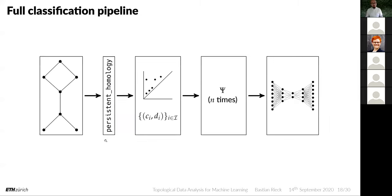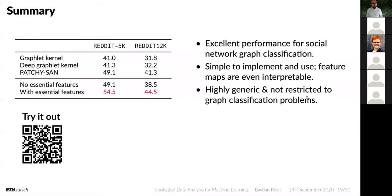The classification pipeline: take a graph, filtrate it, apply persistent homology to obtain a diagram, compute the psi function with different parameters, and feed the resulting features into a deep learning architecture for graph classification. They show excellent performance for social network graph classification. Importantly, including essential features — those with no finite destruction time, corresponding to cycles — considerably improves classification. They can outperform other approaches by including cycle information.